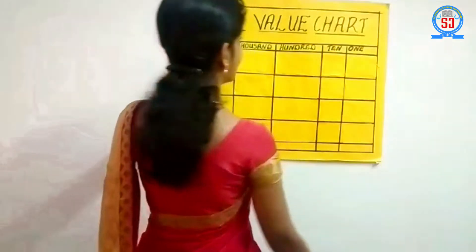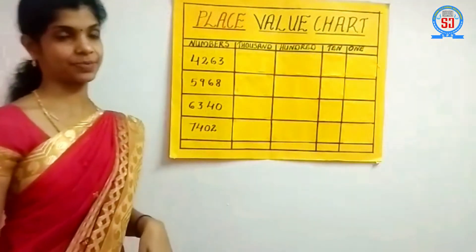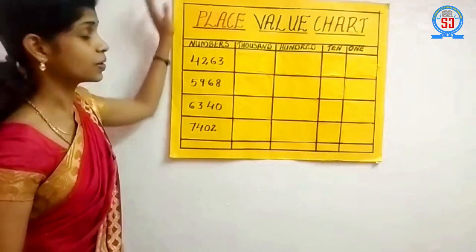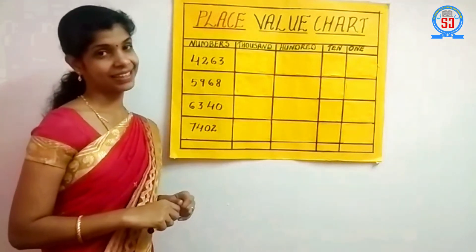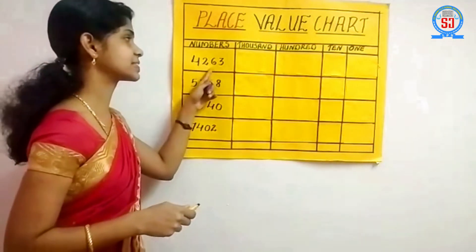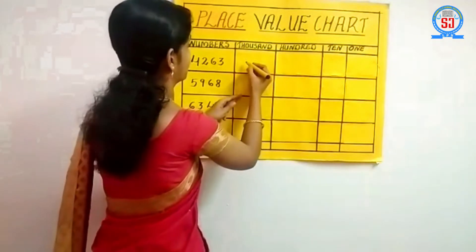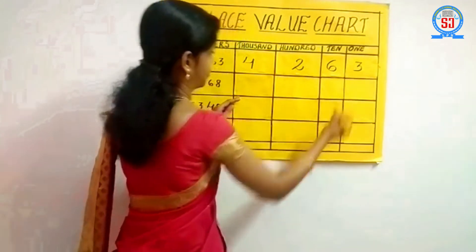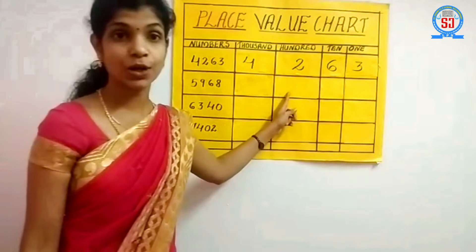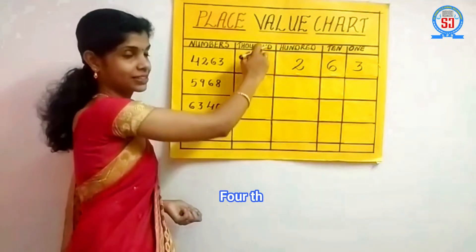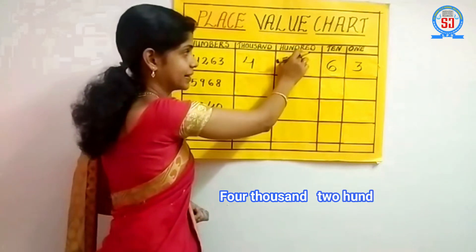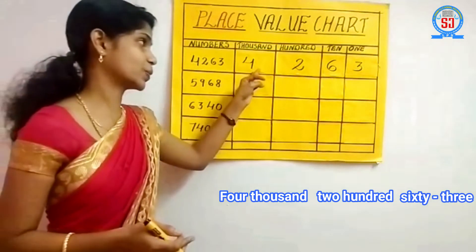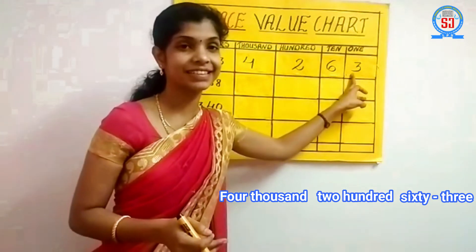Now let's read some numbers. I have written some numbers here: 4, 2, 6, 3. Can you read this number? I will say an easy way — I will write these numbers in columns: 4, 2, 6, 3. Now let's read: four is in the thousands, two in the hundreds — so four thousand two hundred — then ten and one together: sixty-three. So we read this number as four thousand two hundred sixty-three.